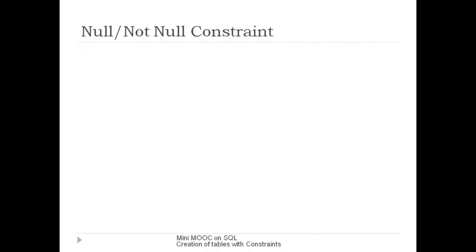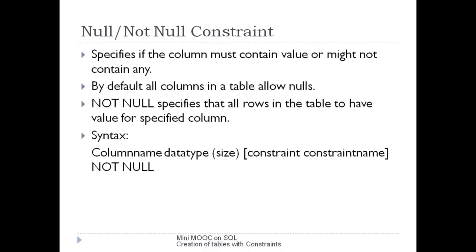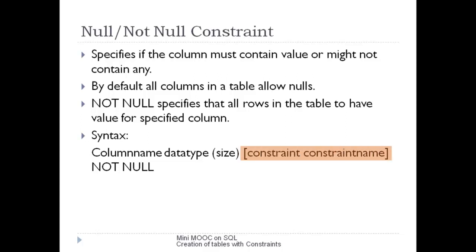The first type of constraint is the NULL or NOT NULL constraint. To make a column mandatory or compulsory, we can apply this constraint during creation of a table. By default, all columns are optional and have the NULL constraint. The syntax is: column name, data type, size, followed by NOT NULL. Every constraint is internally assigned a unique name by Oracle.